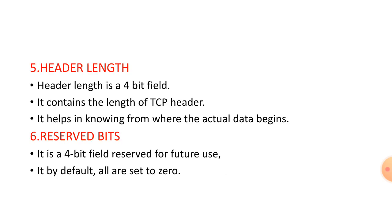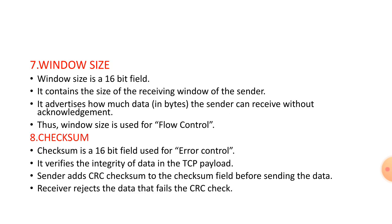Header length is a 4-bit field. It contains the length of the TCP header. The actual data where it begins is denoted by the header length. Reserved bits are reserved for future use — it is a 4-bit field and they are all set to 0.